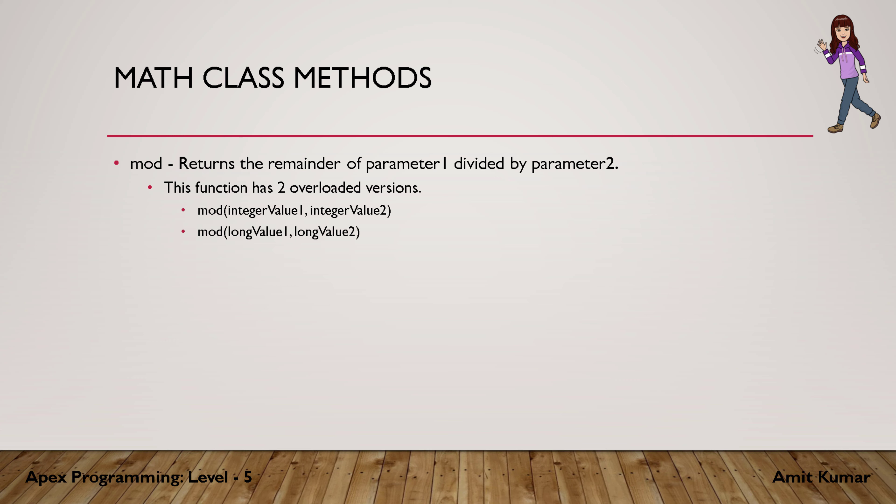The mod method is used to return the remainder of parameter 1 divided by parameter 2. Unlike other programming languages, we don't have a mod operator here, so if you want to get the remainder of any division you pass it to Math.mod, where the first parameter is the dividend and the second is the divisor. We can only pass integer or long, so there are only two overloaded versions.